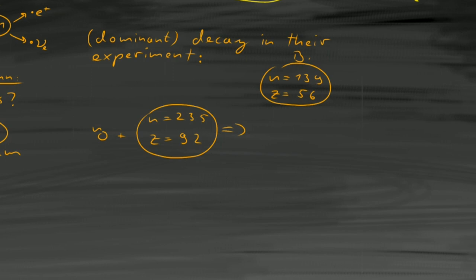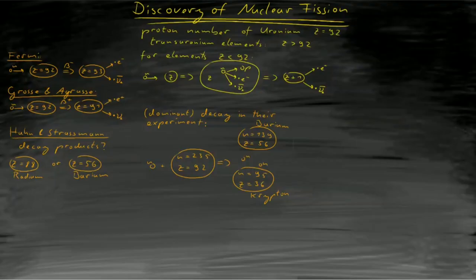But after four years of research, Hahn and Strassmann finally proved that the experiment created barium rather than radium.